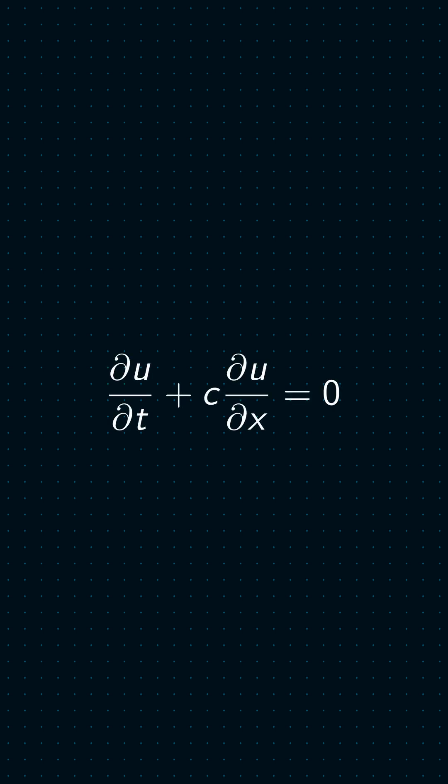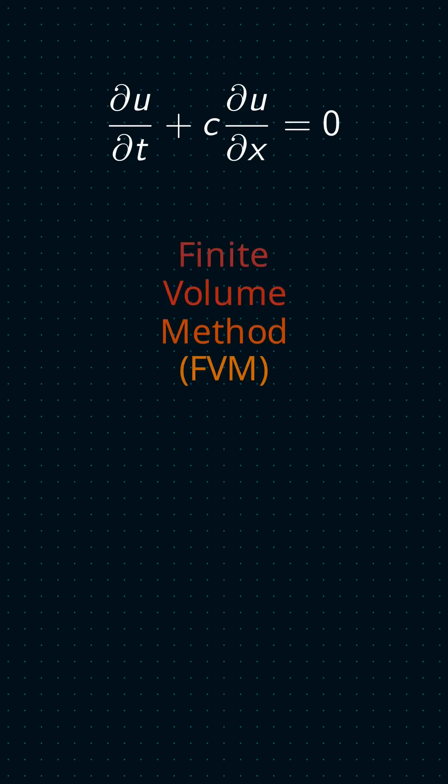Let's simulate the one-dimensional linear unsteady state convection equation using finite volume method. For the domain, we will consider a straight line with a square pulse in it.